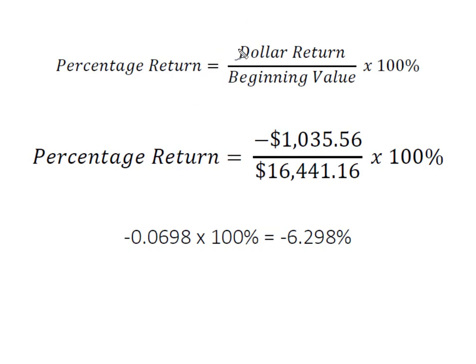Now when we look at percentage return, we simply take that dollar return we just calculated — negative $1,035.56 — and divide it by the beginning value, which was $29.36 per share, giving us $16,441.16. We want to express this as a percentage, so we multiply by 100%. That gives us negative 0.0629, and moving the decimal two spots gives us a percentage return of negative 6.298%.